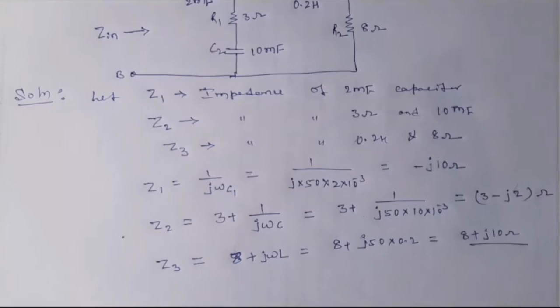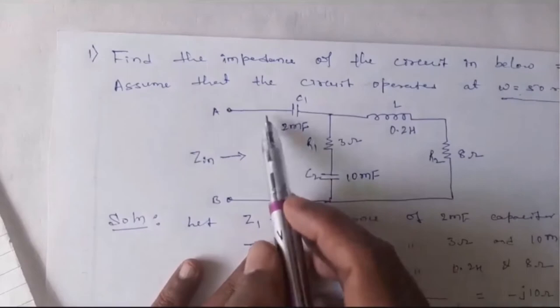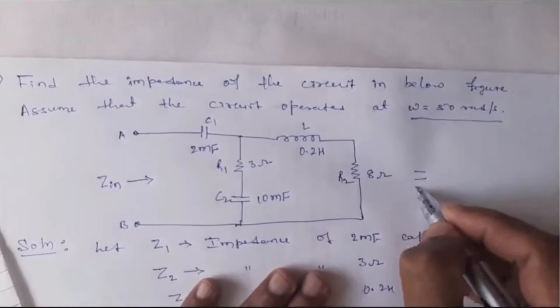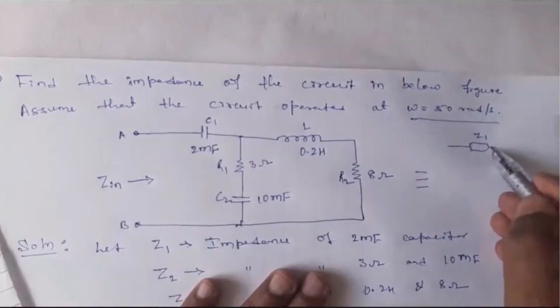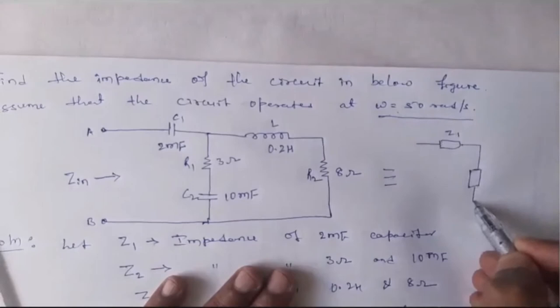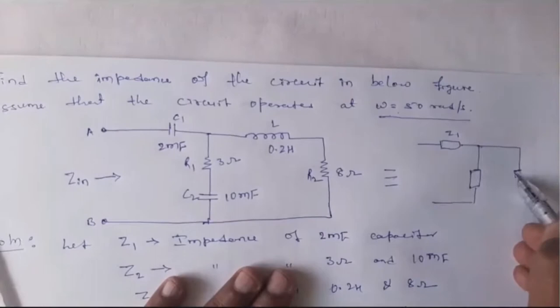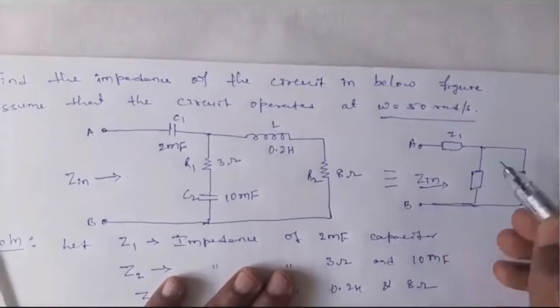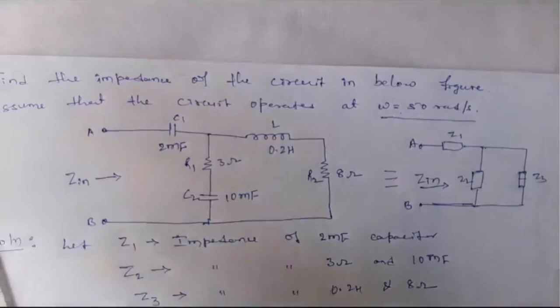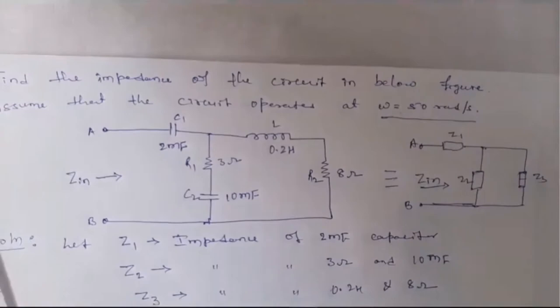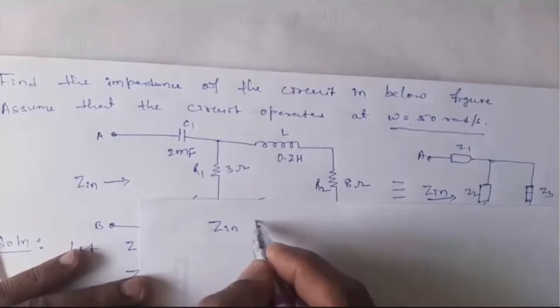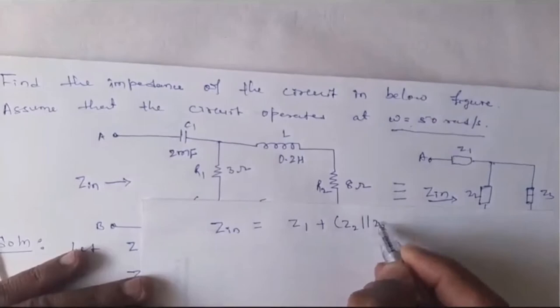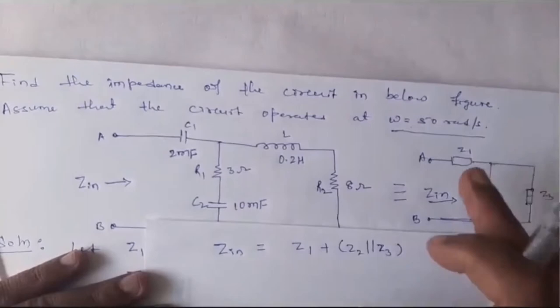An important point: looking at the equivalent circuit, Z1, Z2, and Z3 can be identified. Z2 and Z3 are in parallel, and Z1 is in series with that parallel combination. Therefore, the input impedance Zin equals Z1 plus the parallel combination of Z2 and Z3.